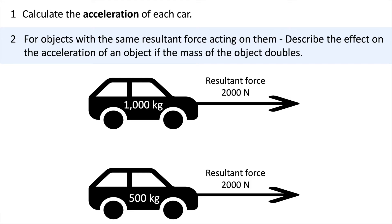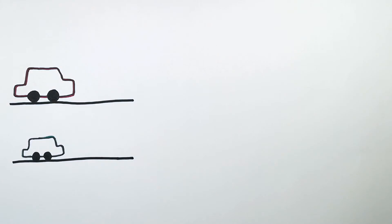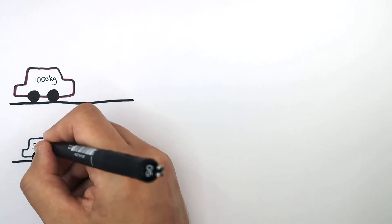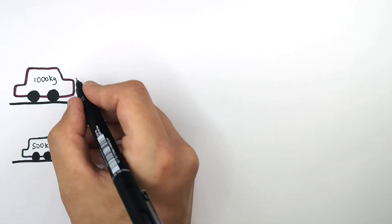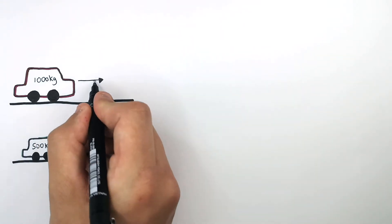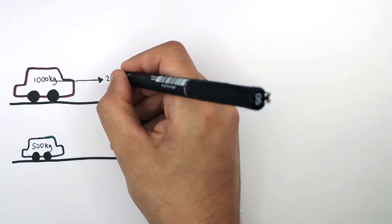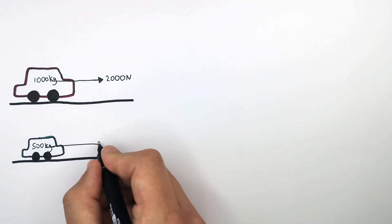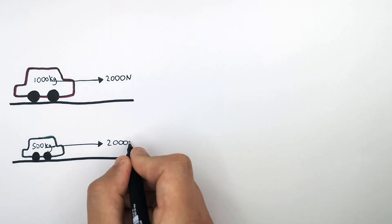This is the problem you will learn how to solve. What we have here are two cars. The top car has more mass — its mass is 1000 kilograms. The smaller car has a mass of 500 kilograms. But there is the same resultant force acting on both cars: both cars are experiencing a forward resultant force of 2000 newtons.